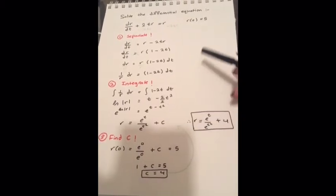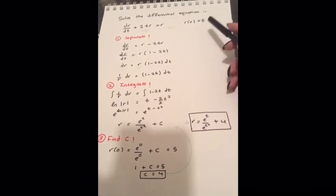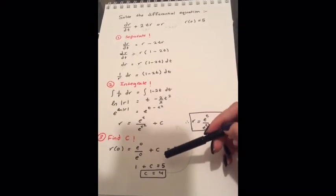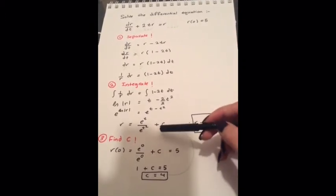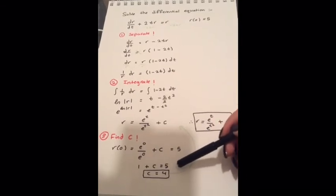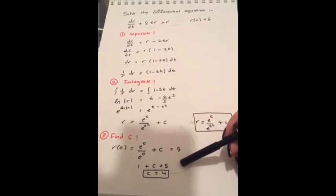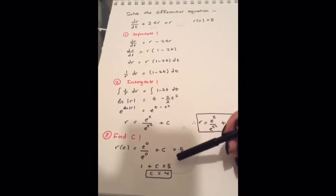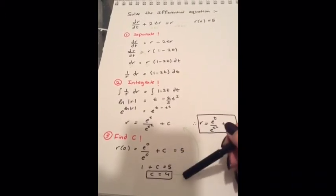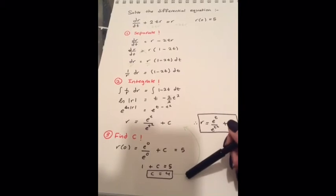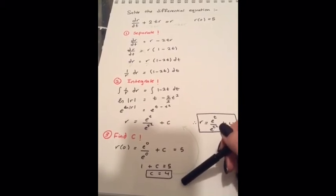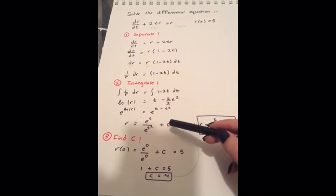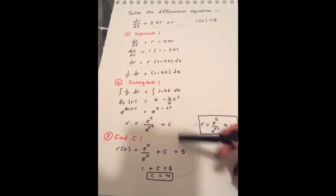Because we have extra information given in the question, we need to find the constant c. So we will substitute 0 into our equation: r(0) equals e to the 0 over e to the 0, plus c, equals 5. The e terms cancel and we are left with 1 plus c equals 5, so c equals 4.